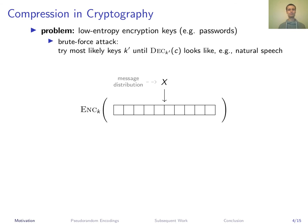Let's have a look at the usefulness of compression in cryptography. Consider the scenario where Alice and Bob want to confidentially send a message but they only share a low-entropy secret key, for instance a password. Simply encrypting with this password allows a brute force attack — one can try all or most likely keys until decryption gives a plaintext that looks valid in some sense, for instance that looks like natural speech.